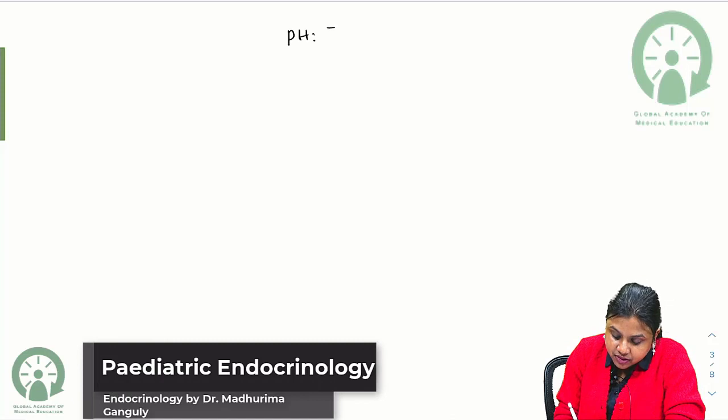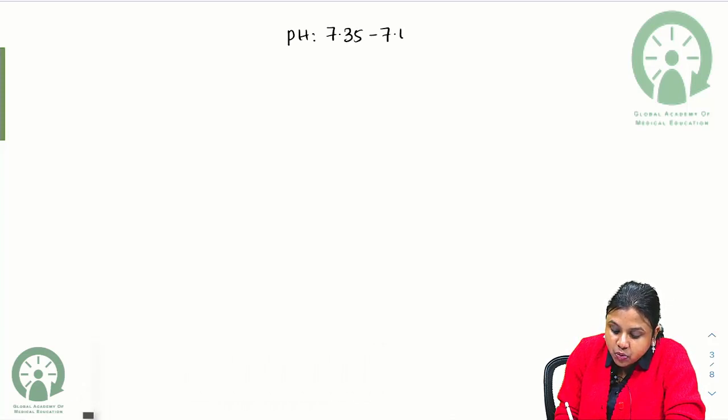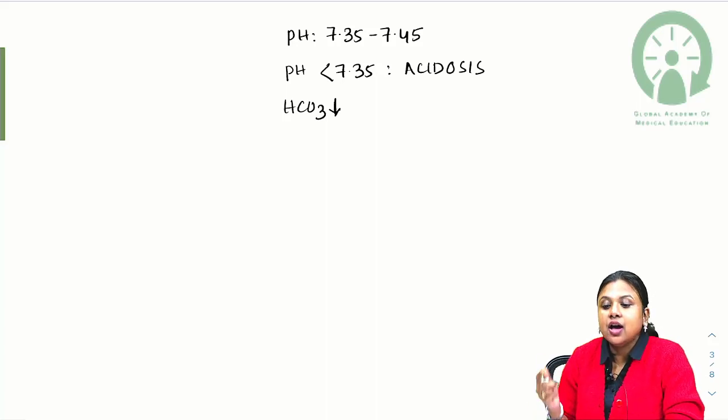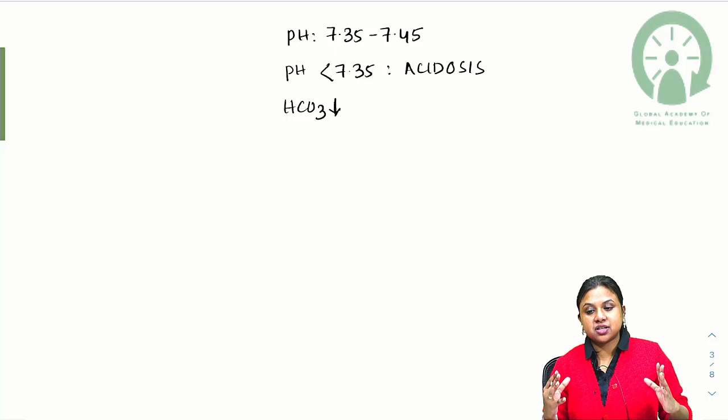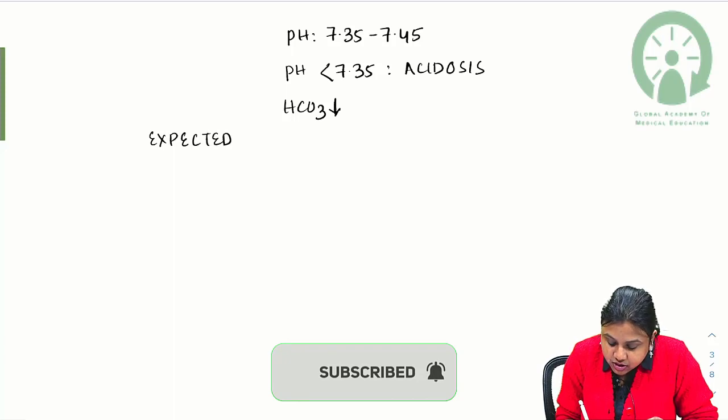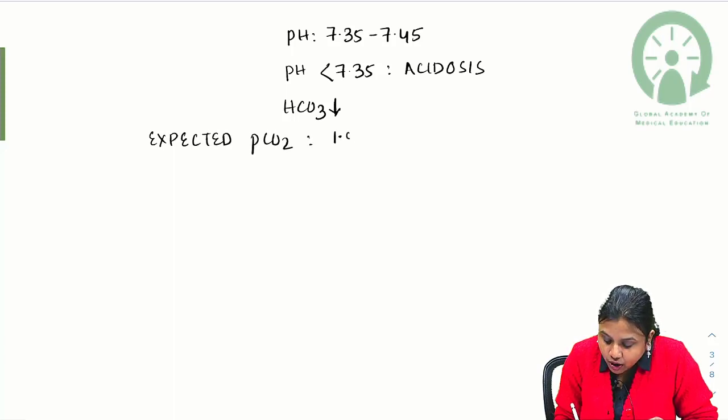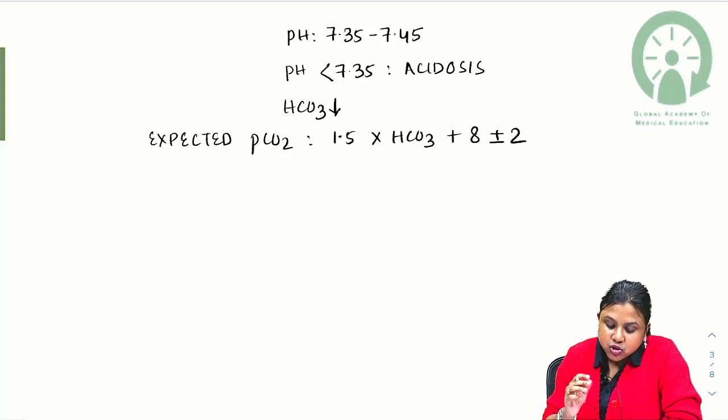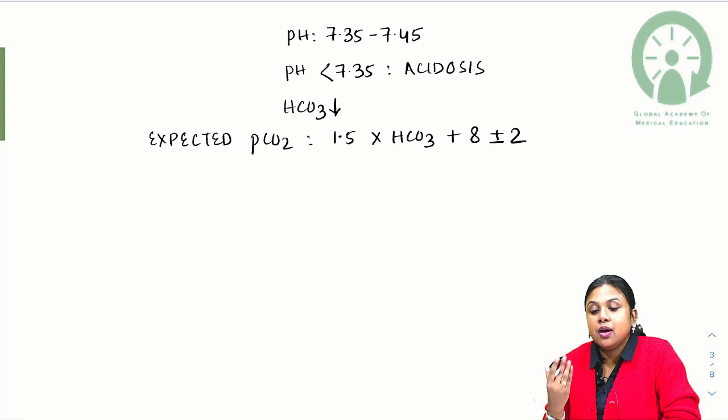Normal pH is 7.35 to 7.45. If the pH is less than 7.35, it is known as acidosis. If bicarbonate is low, then I have to see the carbon dioxide level. How can I measure the expected pCO2 level? By Winter's formula. Expected pCO2 is 1.5 times HCO3 plus 8 plus minus 2. If we are sure that we are dealing with metabolic acidosis...